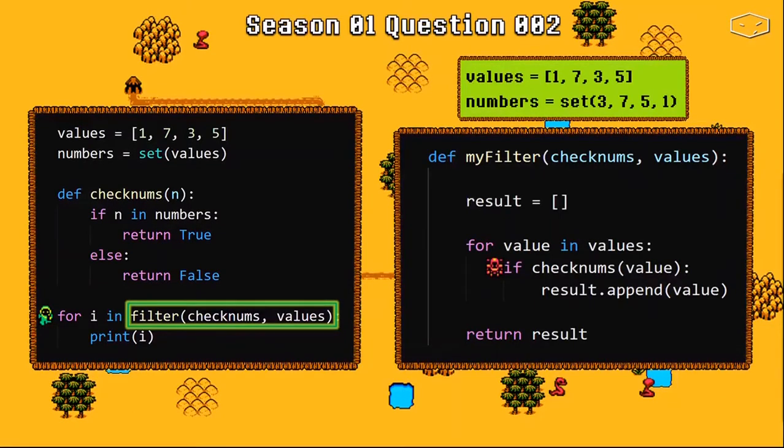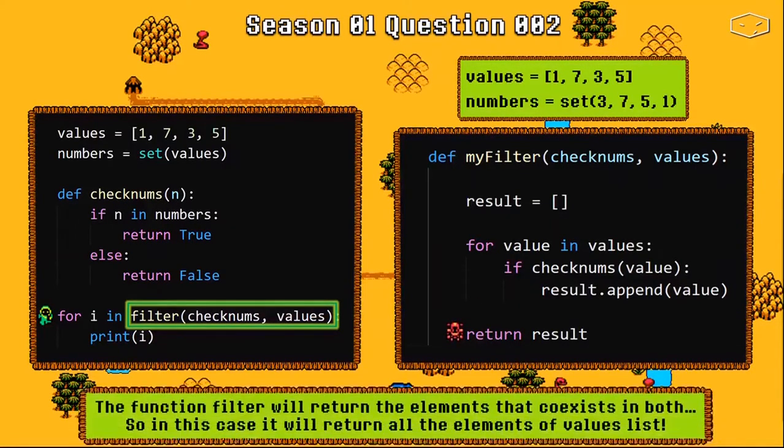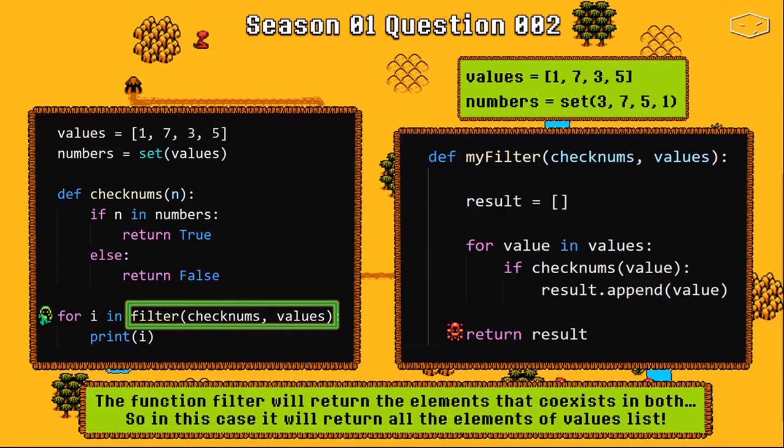Again, the number set have all the elements of values list. So, this check numbers function will always return true in this case. So, each element will be added to the result list and at the end it will return all the elements of the values list.